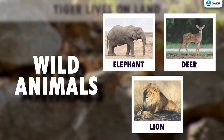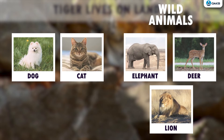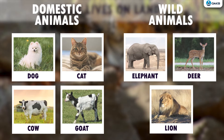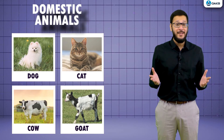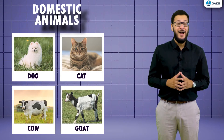These animals are also called wild animals — they live in the forest. On the other hand, animals like dogs, cats, cows, and goats can be domesticated for various uses and are called domestic animals. Can you tell how these domestic animals are useful for us?